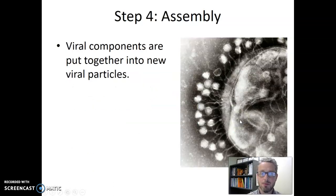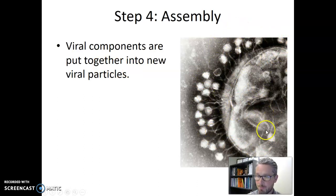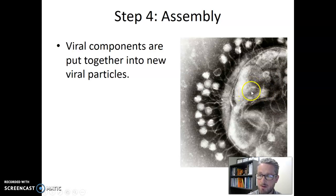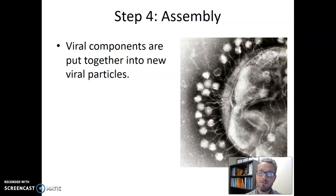Now the cell is filled with all the pieces used to make viruses. In the next step — assembly — we take those viral components and put them together into new viruses. We can see that in this electron micrograph of a bacterial cell infected by bacterial viruses: inside, we can see complete capsids with tail fibers hanging off of them. The virus has tricked the cell into making all the viral components, and now they are being assembled into complete viral particles.